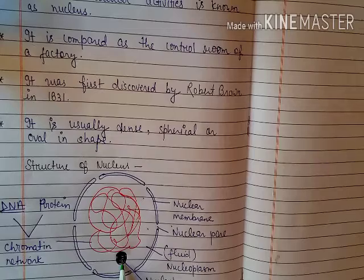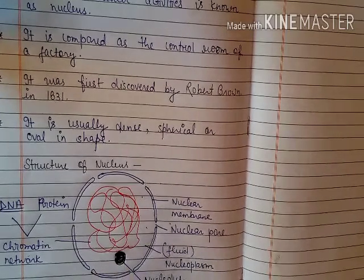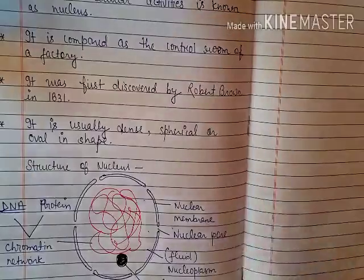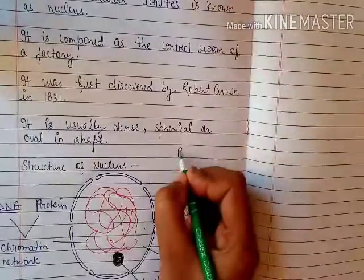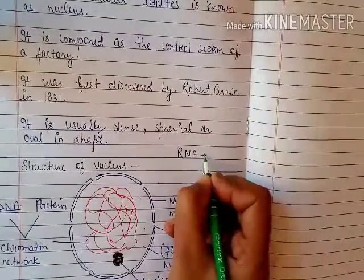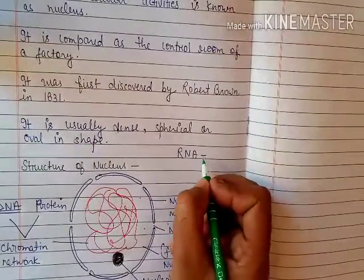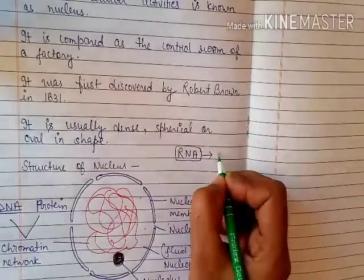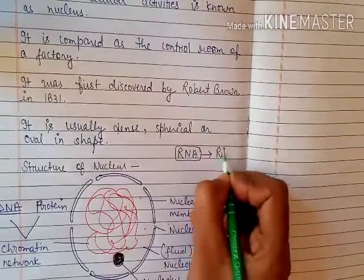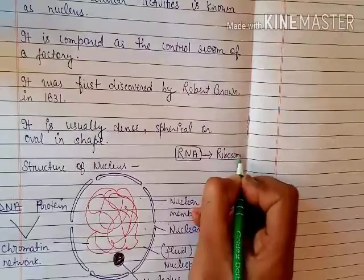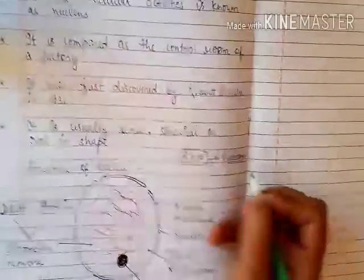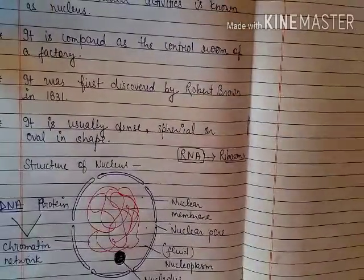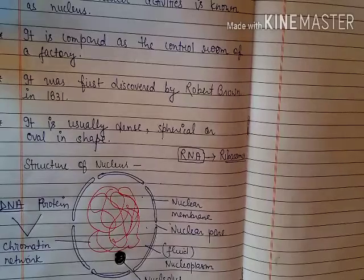The nucleolus, the dense rounded body inside the nucleus, is made up of RNA. That RNA is used to make ribosomes, which is why the nucleolus is known as the factory of ribosomes.